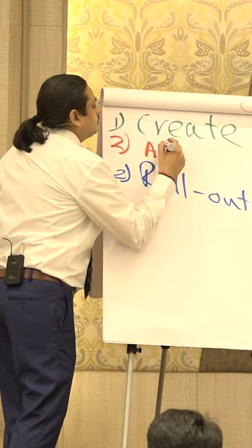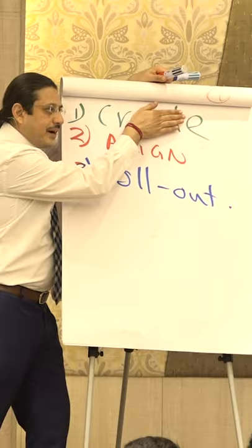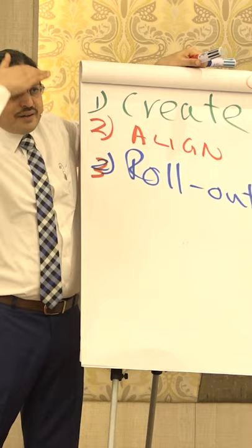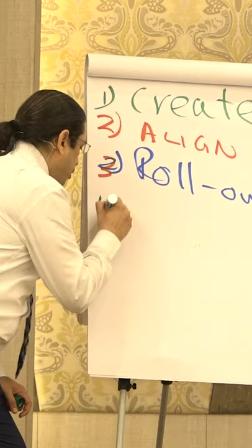And this is the third step. First, you don't need to create — we don't need to create the system. We don't have a structure to create the system. Align them. Roll the system out. The fourth point is monitoring.